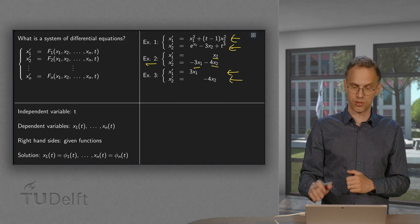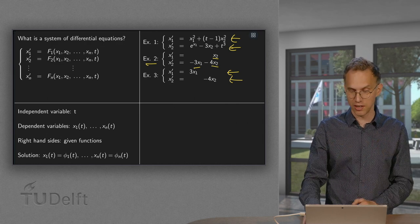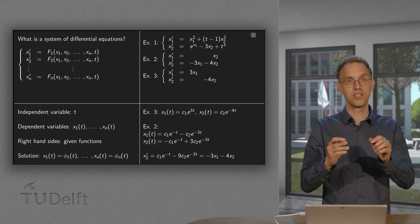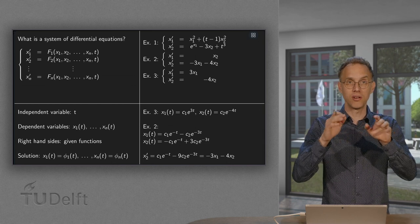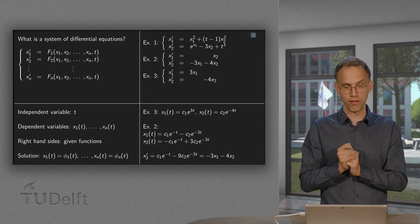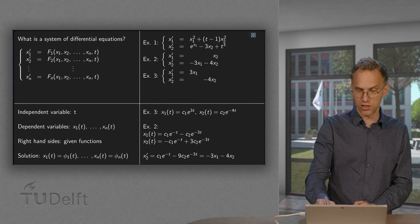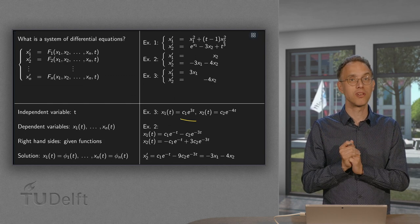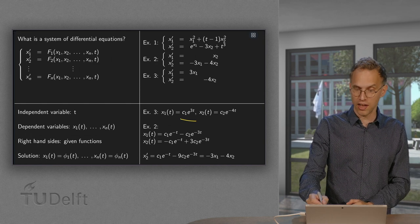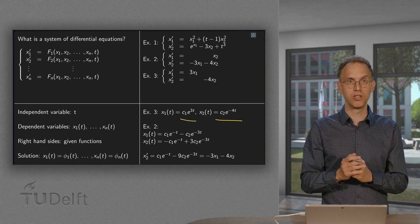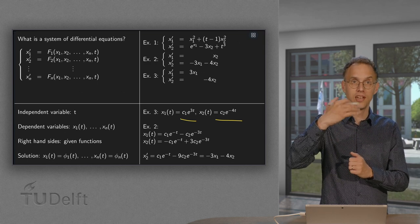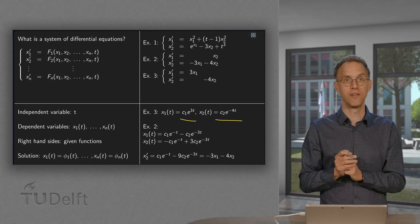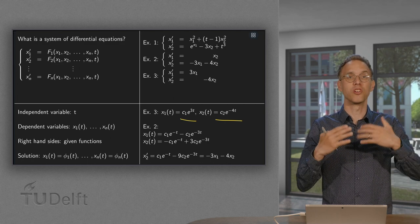Now let us take a look at solutions. Example three is the easiest one, because x1 prime equals 3 times x1, which does not depend on x2, so you can solve this one first. The solution is a constant times e to the power 3t. And x2 prime equals minus 4x2, which does not depend on x1, so you can solve that separately. The final solution is x1(t) equals C1 times e to the power 3t, and x2(t) equals C2 times e to the power minus 4t. These are called uncoupled equations.